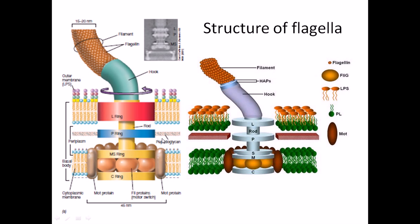There is another section not shown in this picture called the stator, which is made up of two important proteins: MotA and MotB. The Mot proteins are embedded not only in the inner membrane but also partially attached to the peptidoglycan layer. The full rotor section includes the L ring, P ring, S ring, M ring, and all associated rings. The Mot section is the stator — it is fixed and does not rotate. Just as rotating machinery needs a fixed outer cover, the Mot proteins serve that role here.